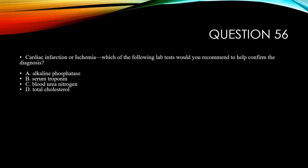Question 56. Cardiac infarct or ischemia — which of the following lab tests would you recommend to help confirm the diagnosis? A, alkaline phosphatase. B, serum troponin. C, blood urea nitrogen. Or D, total cholesterol.